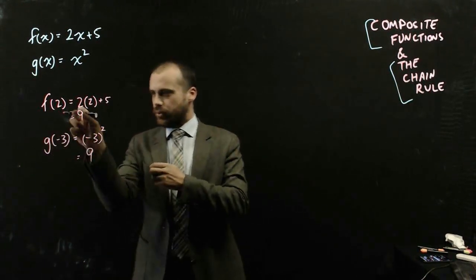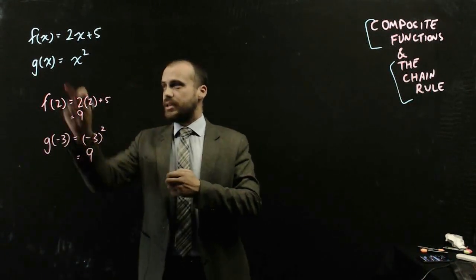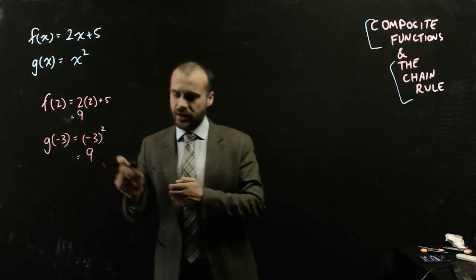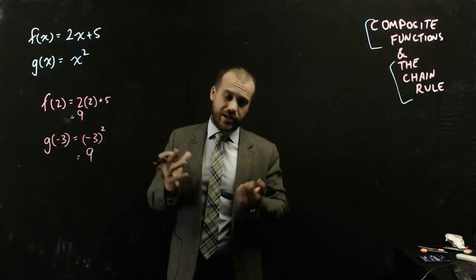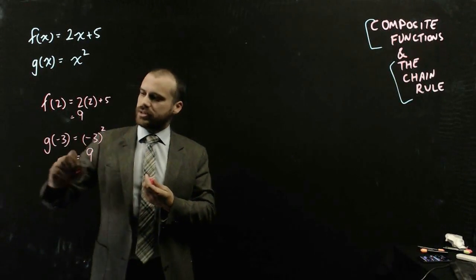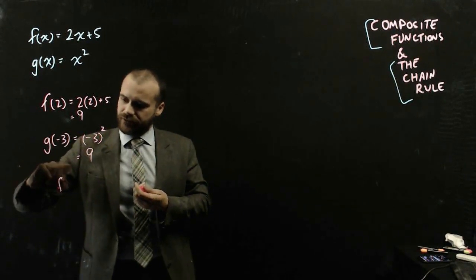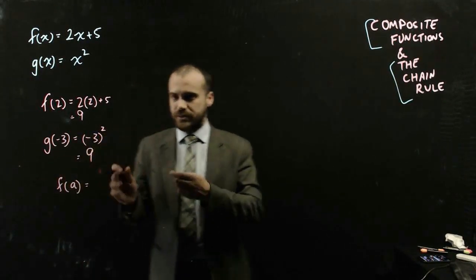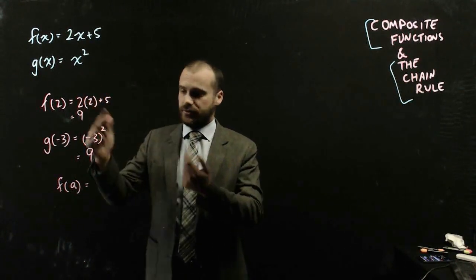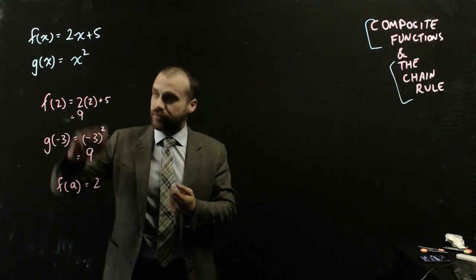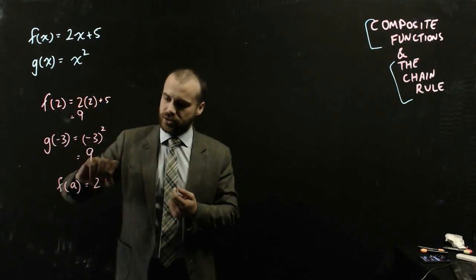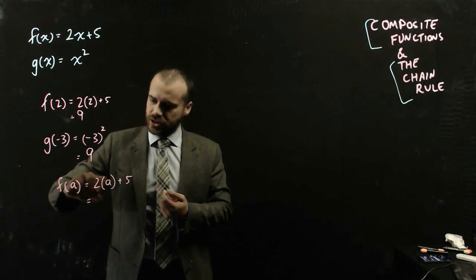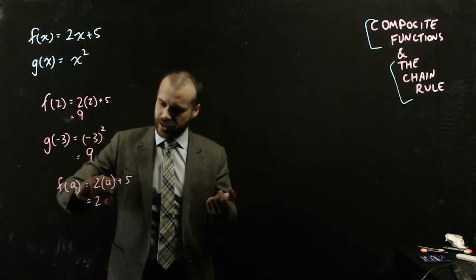We can put numbers into our functions using function notation. You can also just put letters into your function. So if you wanted to say f of a, that just means put a into f — wherever x appears, you're now putting a in. That really doesn't change anything; it just transforms the x into an a.